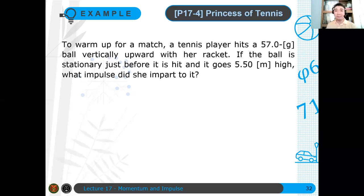Okay, our final problem for this session, Princess of Tennis. To warm up for a match, a tennis player hits a 57-gram ball vertically upward with her racket. If the ball is stationary before it hits and it goes 5.50 meters high, what impulse did she impart to it?